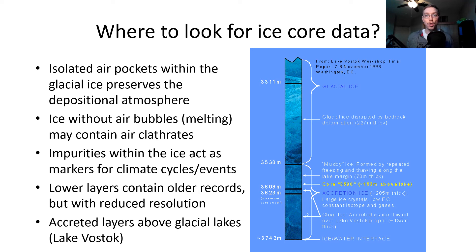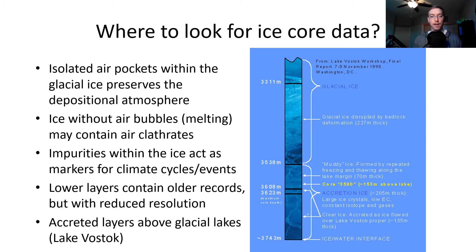So where do we look for ice core data? We look in isolated air pockets within the glacial ice, because that preserves the dominant depositional atmosphere. Ice without bubbles or melting may contain air clathrates. Impurities within the ice act as markers for climate cycles and events. Lower layers contain older records but with reduced resolution. Accreted layers above glacial lakes can basically reflect constant isotopes and gases within the subsurface.